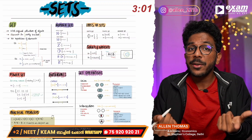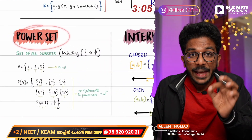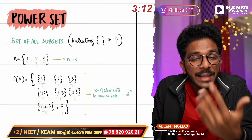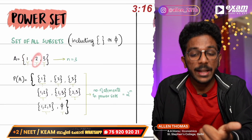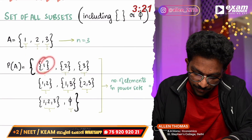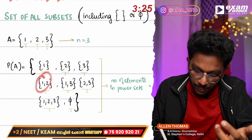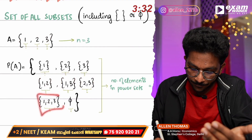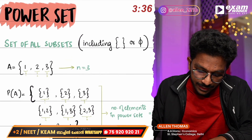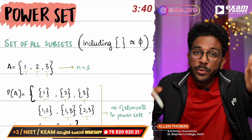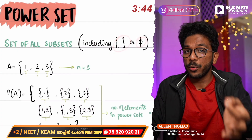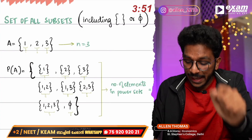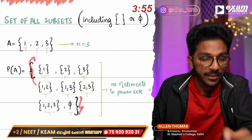This is the power set. A = {1, 2, 3}. The power set is the set of all subsets. The subsets include the empty set, {1}, {2}, {3}, {1,2}, {2,3}, {1,3}, and {1,2,3}. That is a proper subset. Power set is denoted P(A) — it is the set of all subsets, including the empty set.